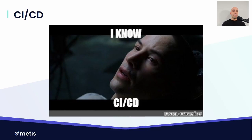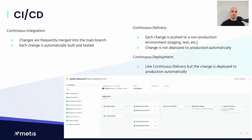The typical answer they tell us is: use CI/CD and this will solve all your problems. CI stands for continuous integration — we take all changes, compile them together, prepare the application package, run unit tests, end-to-end tests, integration tests, to make sure things run properly in our synthetic smaller environments.